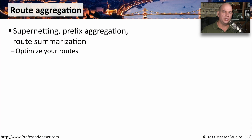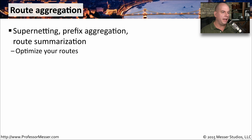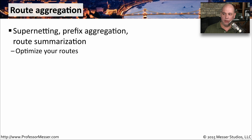When you start working with routers, especially on larger networks, you'll find that your routing table starts getting larger and larger. One of the things you can do to optimize this routing table is to summarize the routes through something like route aggregation. You may see this referred to as supernetting, prefix aggregation, or route summarization — it's effectively all the same thing. We're taking a list of routes and summarizing them down to perhaps one single route to make our routing tables much more efficient.